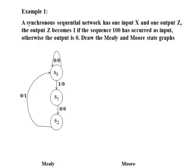In state S1, when the network receives a 1, the network will remain in the same state S1. And in state S2, when the network receives a 1 as input, it returns to state S1 and the output is still 0.